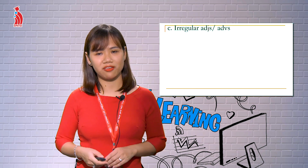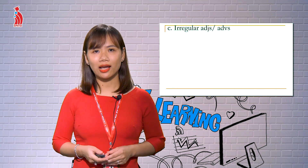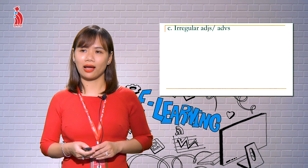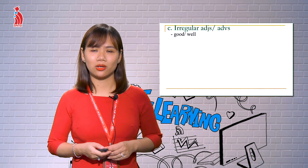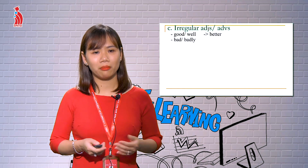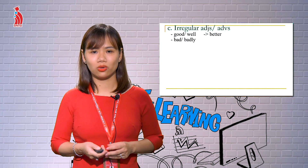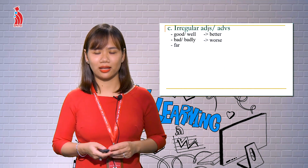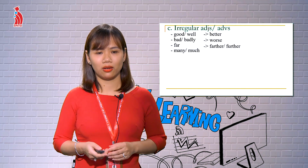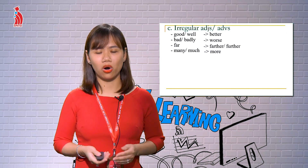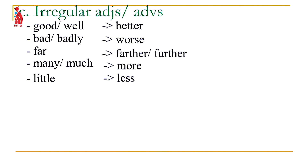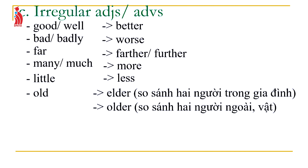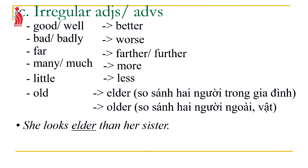The third type is irregular adjectives and adverbs: good/well → better; bad/badly → worse; far → farther/further; many/much → more; little → less; old → elder (when comparing two family members) or older (when comparing people outside the family or things). For example: 'She looks elder than her sister' or 'He studies worse than me.'